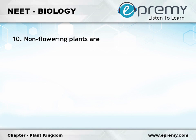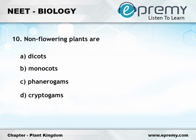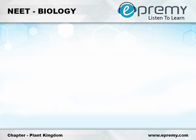Question number ten: non-flowering plants are option A dicots, option B monocots, option C phanerogams, option D cryptogams. The answer is option D cryptogams. This is brought to you by ePremie.com. Question number eleven: fungi resemble algae except...